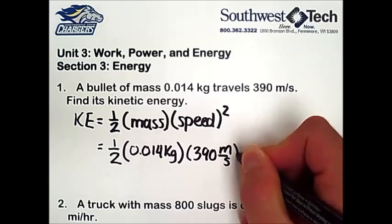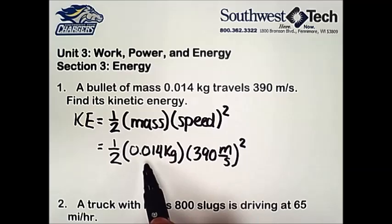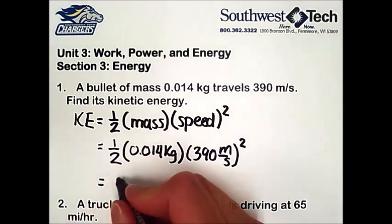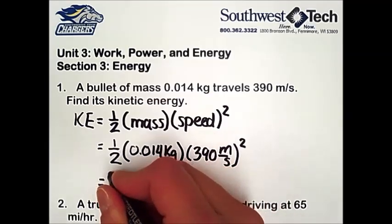So when we take 390 meters per second, square that, and multiply that by 0.014 multiplied by 1 half, we should get approximately 1,065 joules.